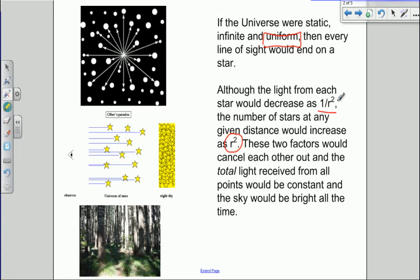These two factors, the intensity of the light reaching us from a particular star and the number of stars at that distance, would cancel each other out. Therefore, the total amount of light received from any point in the sky would be constant. Let's have a look at that in a little bit more detail and see why that's true.